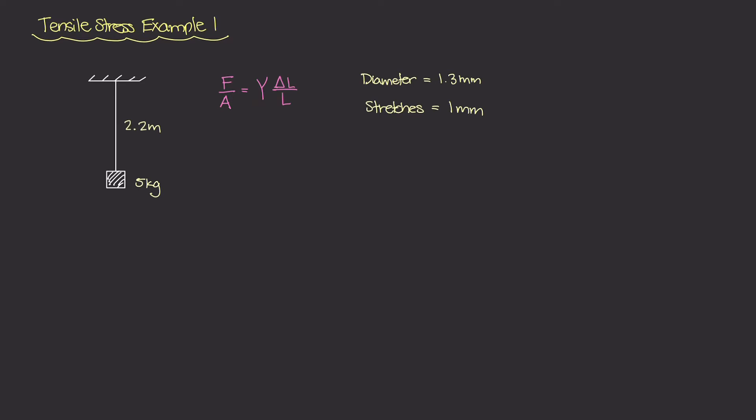So let's start off on the left side of the equation, this F over A which is our tensile stress. Now our F we know force to be mass times gravity. So we have mass which is this 5 kilograms and our gravitational constant is 9.81 meters per second squared. So we have 5 kilograms times 9.81 meters per second squared and this is equal to about 49.05 newtons.